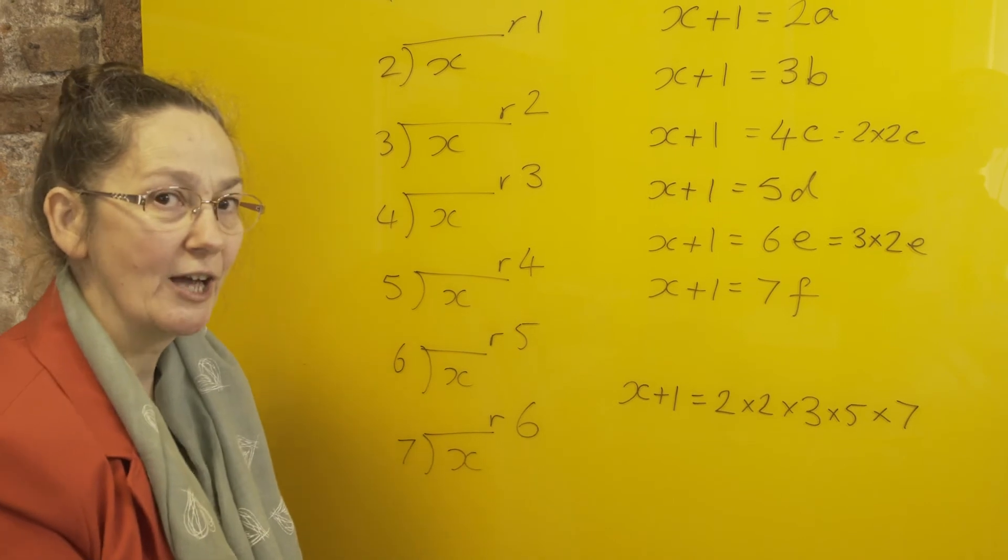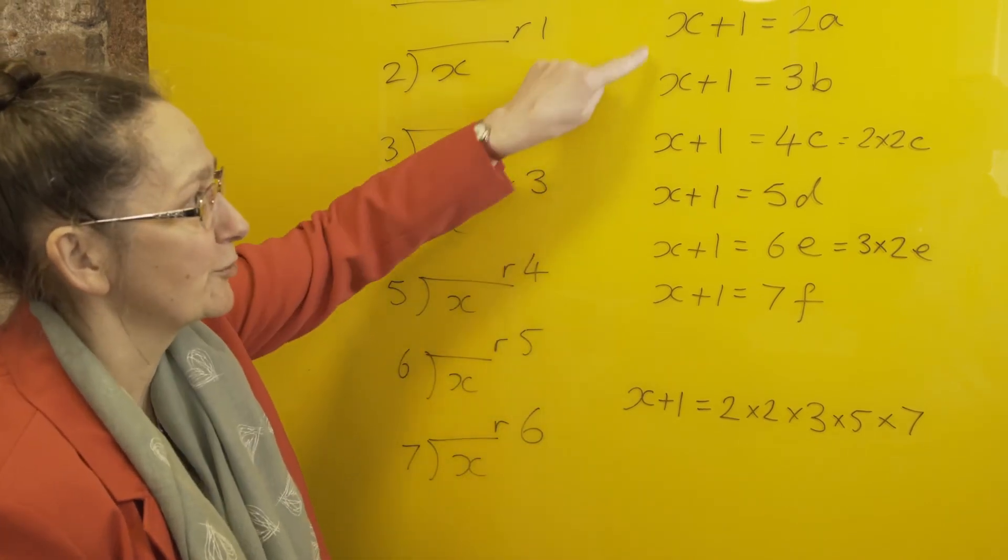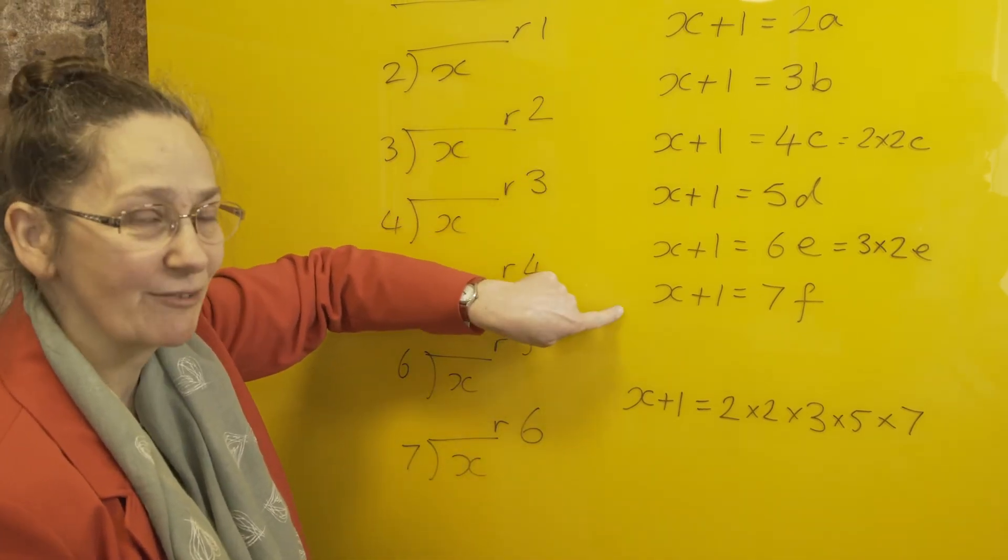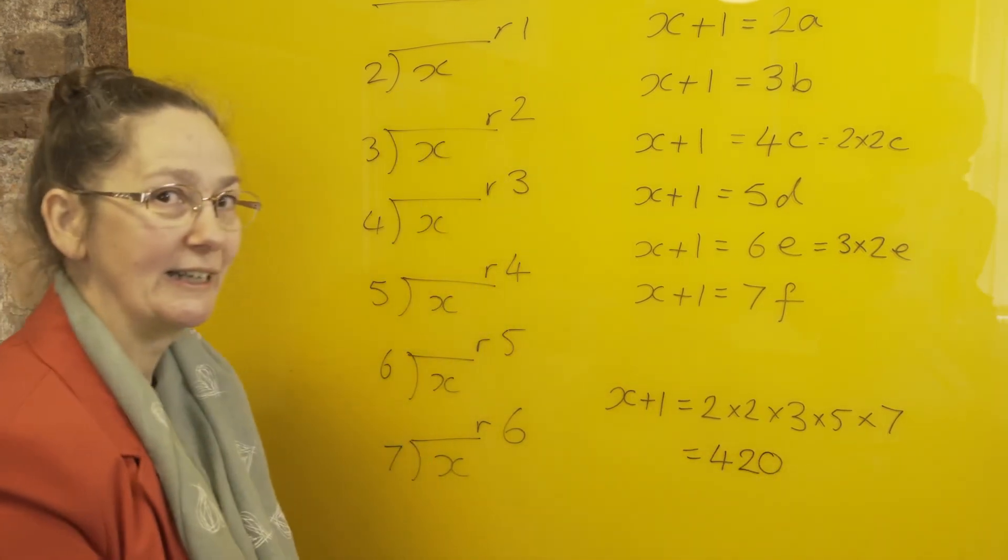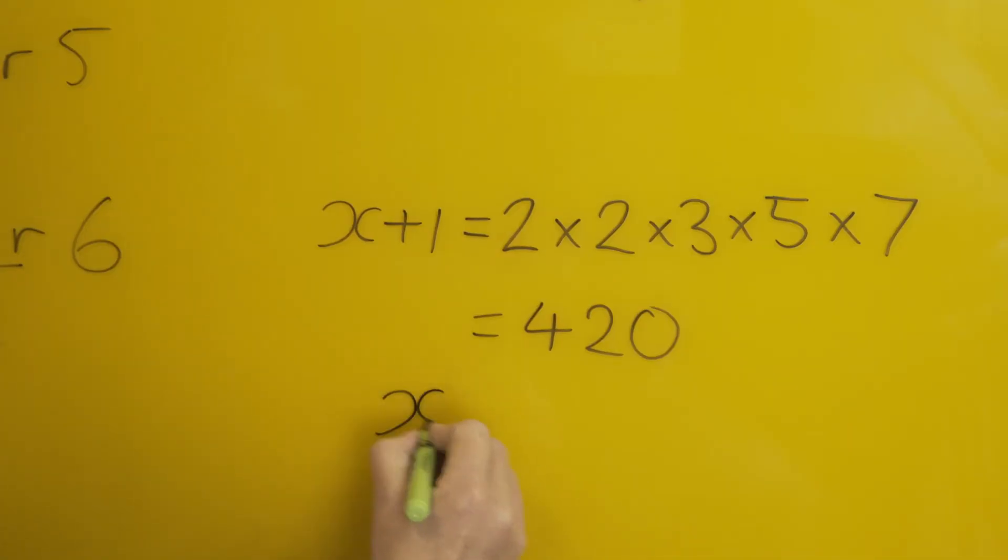So if I multiply all of those together, I get a number which has 2, 3, 4, 5, 6, and 7 as factors. And if you multiply those all together, you get 420—trust me. And that means that the x that I started with must be 419.